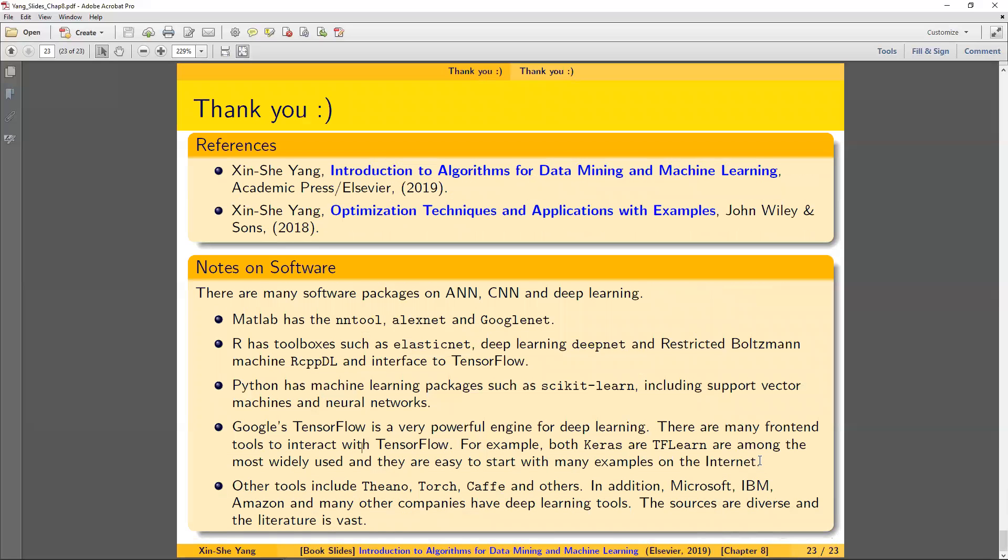In terms of packages, MATLAB has NN2, AlexNet, GoogleNet, and R has ElasticNet, DeepNet, and RCPPDL, and interface to TensorFlow. Python has scikit-learn, and it actually has support vector machines and neural nets, and Google has TensorFlow and Keras. So that's the key software packages actually implemented for neural nets and deep learning. You should try some of this in your spare time.